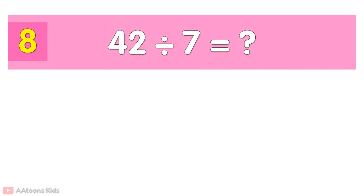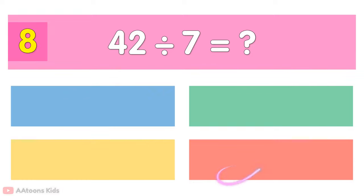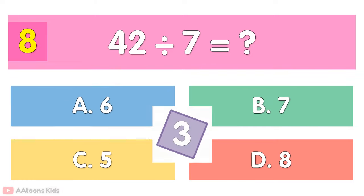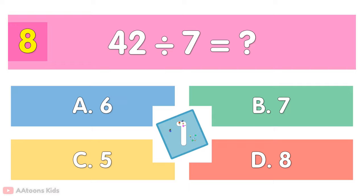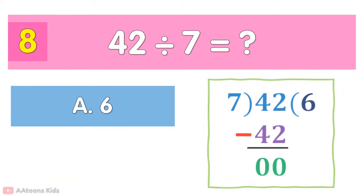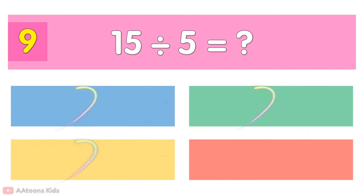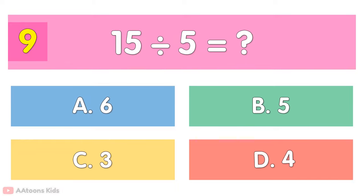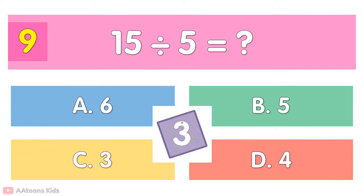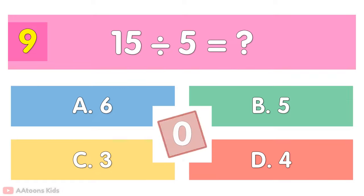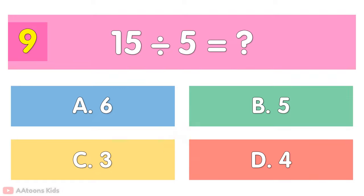42 divided by 7 is... 6. 15 divided by 5 is... 3.